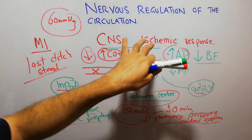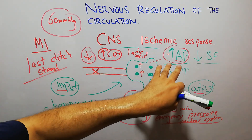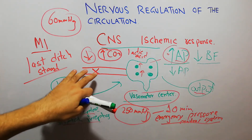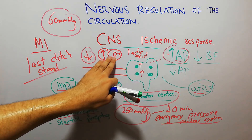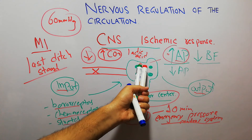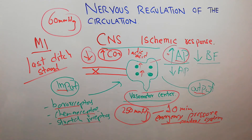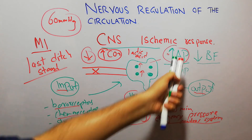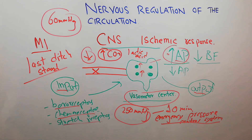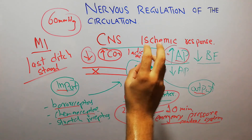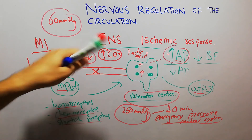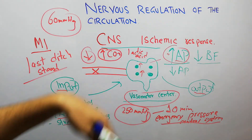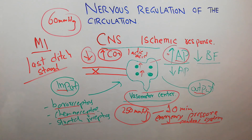In summary, the CNS ischemic response is an increase in arterial pressure due to ischemia of the brain or decreased blood flow to the vasomotor center. When blood flow decreases, accumulation of carbon dioxide and lactic acid causes extreme stimulation of the vasoconstrictor and vasodilator areas, producing extreme elevation in arterial pressure. This is an excellent example of how the nervous system — the brain, spinal cord, and nerves — is fundamentally involved in the regulation of circulation.